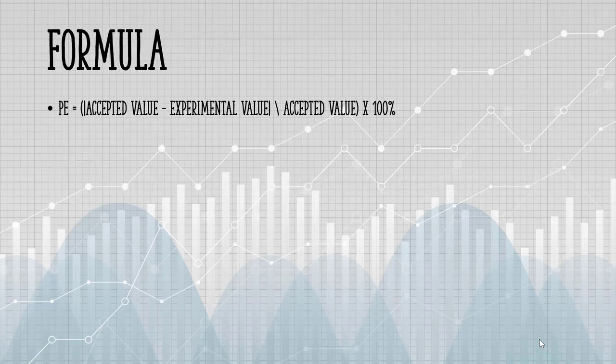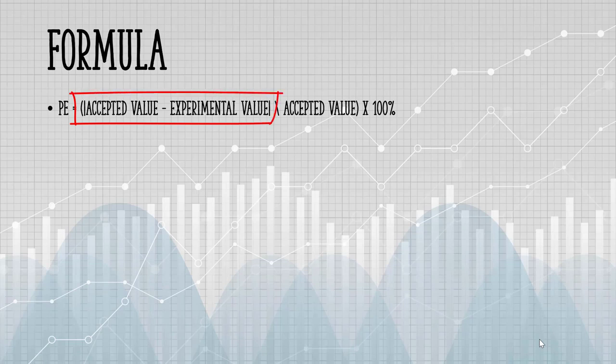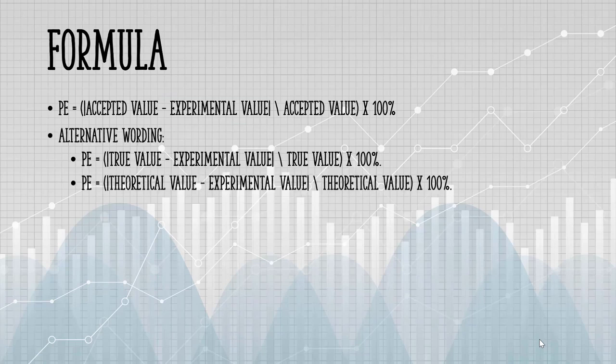The percent error formula is the absolute value of accepted value minus experimental value, divided by the accepted value, multiplied by 100%. You might also see the accepted value written as the true value or theoretical value. For the purposes of calculations, they all mean the same thing.